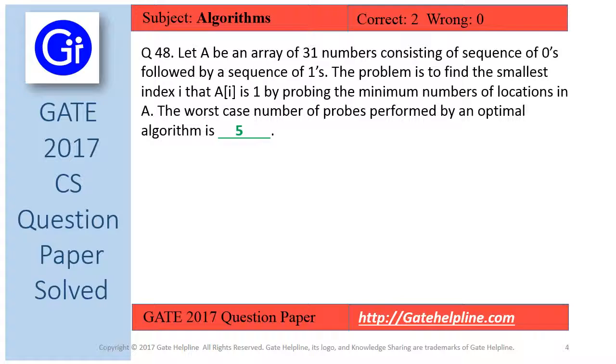So friends, as we have discussed, 5 is the number of worst-case probes performed by an optimal algorithm.